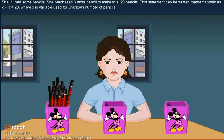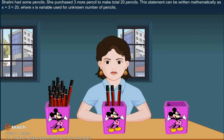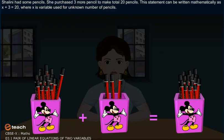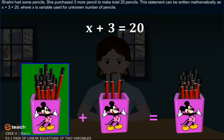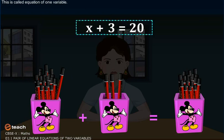Shalini had some pencils. She purchased three more pencils to make total 20 pencils. This statement can be written mathematically as x plus 3 is equal to 20, where x is variable used for unknown number of pencils. This is called Equation of One Variable.